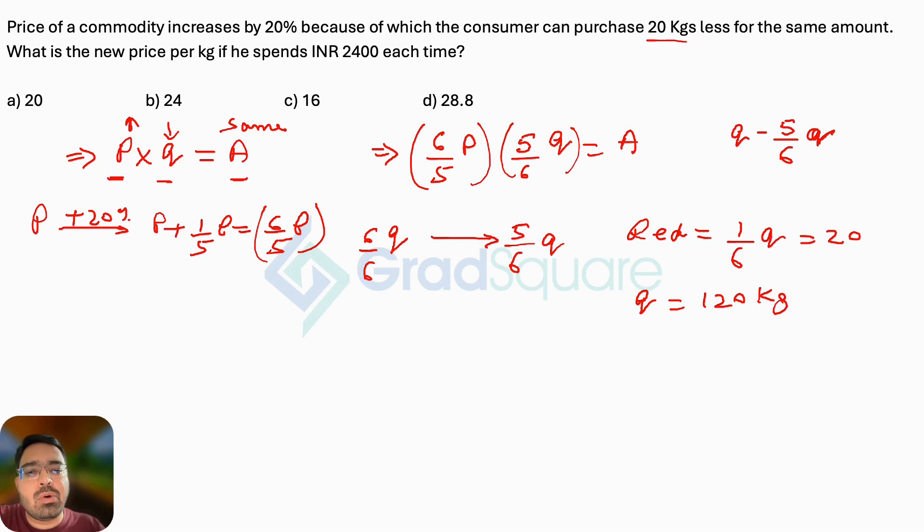So what is the quantity that he can purchase now? The new quantity that he is purchasing is 20 kgs less than this, which is 100 kgs.